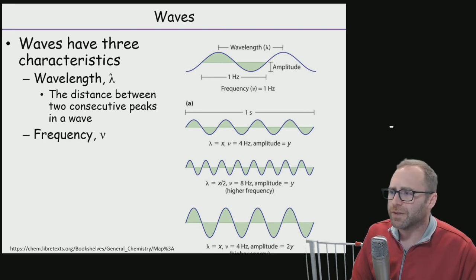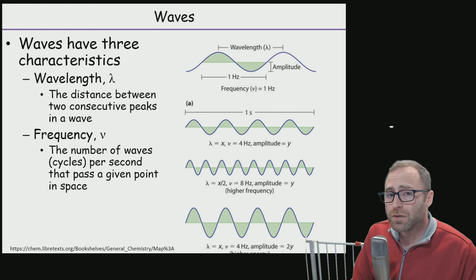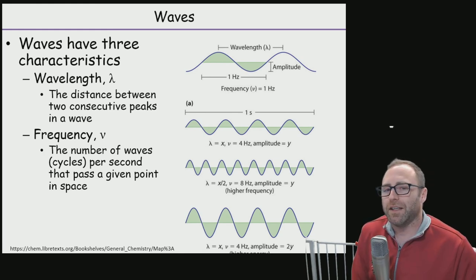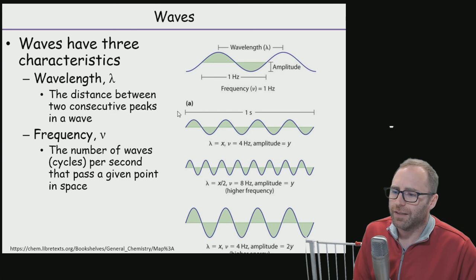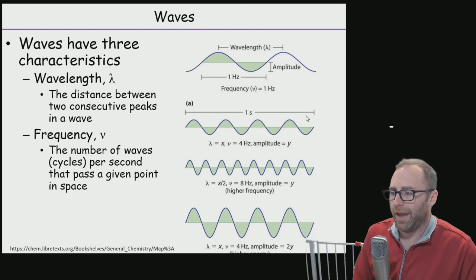We're going to talk about frequency. Frequency is going to get that fancy V. This is the number of waves, number of cycles per second that a wave is going to pass a given point per second. So what does that mean? Let's take a look at the examples down here at the bottom of the page. If we say that from the far left here to the far right is the number of waves that are occurring within one second for a wave, we could count the number of waves that happen.